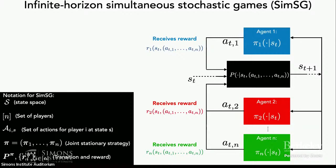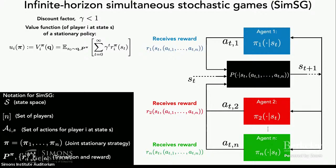I'm going to consider the discounted model with discount factor γ strictly less than 1, although some results extend to the average reward case. Under this model, the value function of player i at an initial distribution q of the stationary policy is simply given by the sum of the discounted rewards, where R^π_i is the reward induced by strategy π. The expectation is with respect to both the initial distribution and the transition kernel induced by the policy. In game-theoretic notation, I'll refer to this as u_i(π), the utility function of player i as a function of the stationary strategy π.